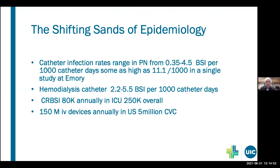Often in some of the pediatric centers, quite a bit less than that. For comparison, a hemodialysis catheter typically has rates reported from dialysis centers of between 2.2 to 5.5 bloodstream infections per thousand catheter days. There are about 80,000 central line-related infections annually in the ICU, 250,000 overall in the United States. There are 150 million IV devices used annually in the US, 5 million central venous catheters — so it's a fairly target-rich environment for bacteria.